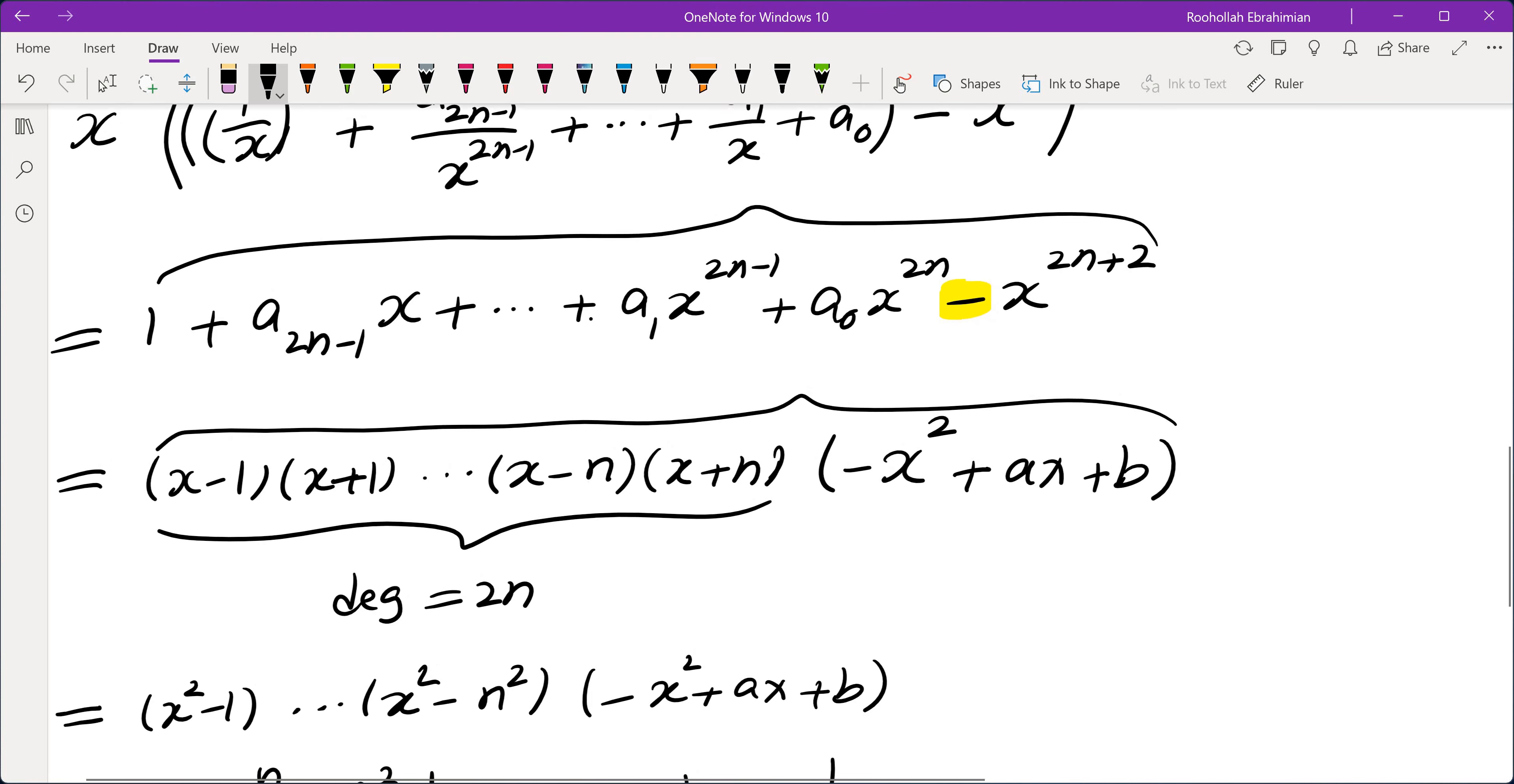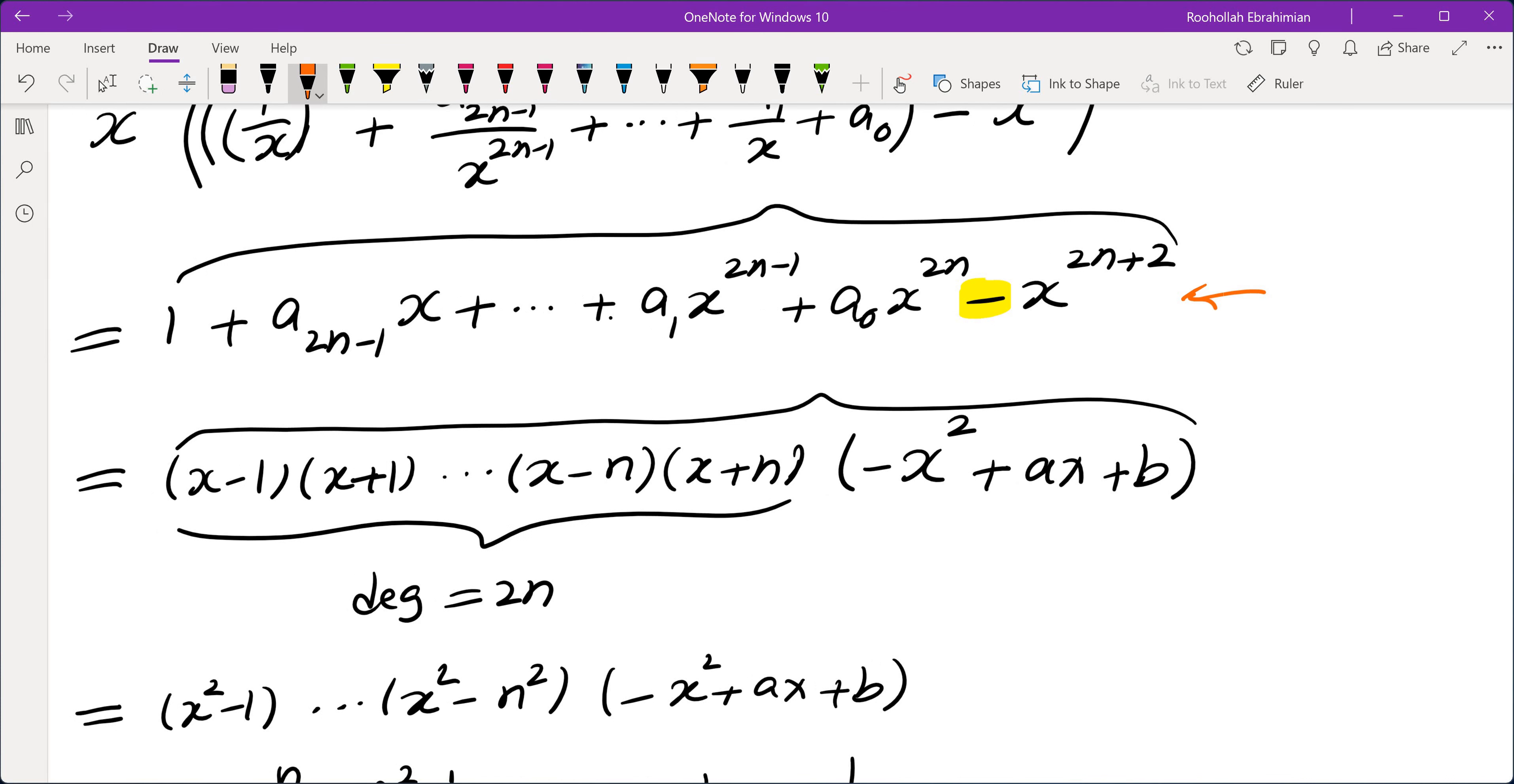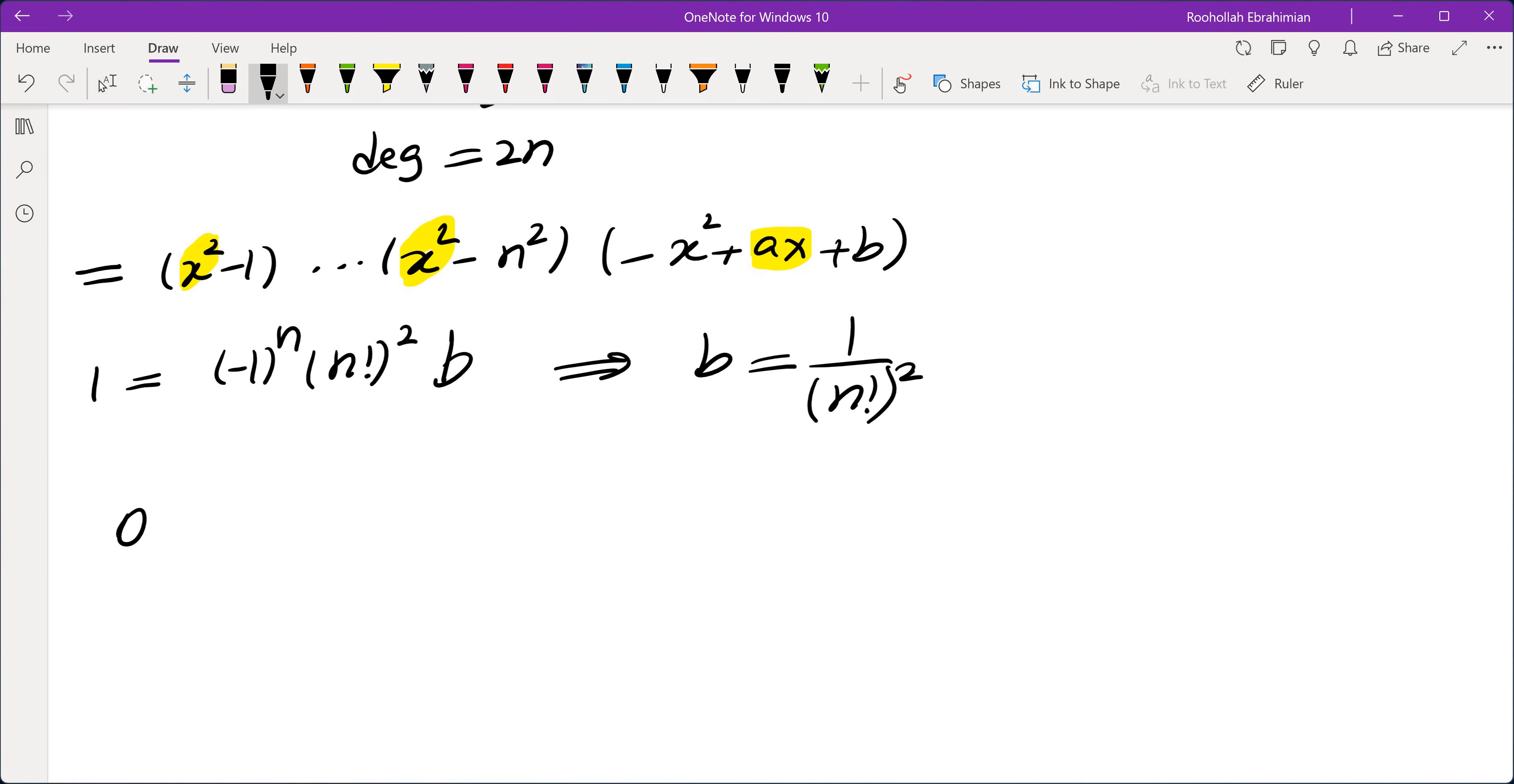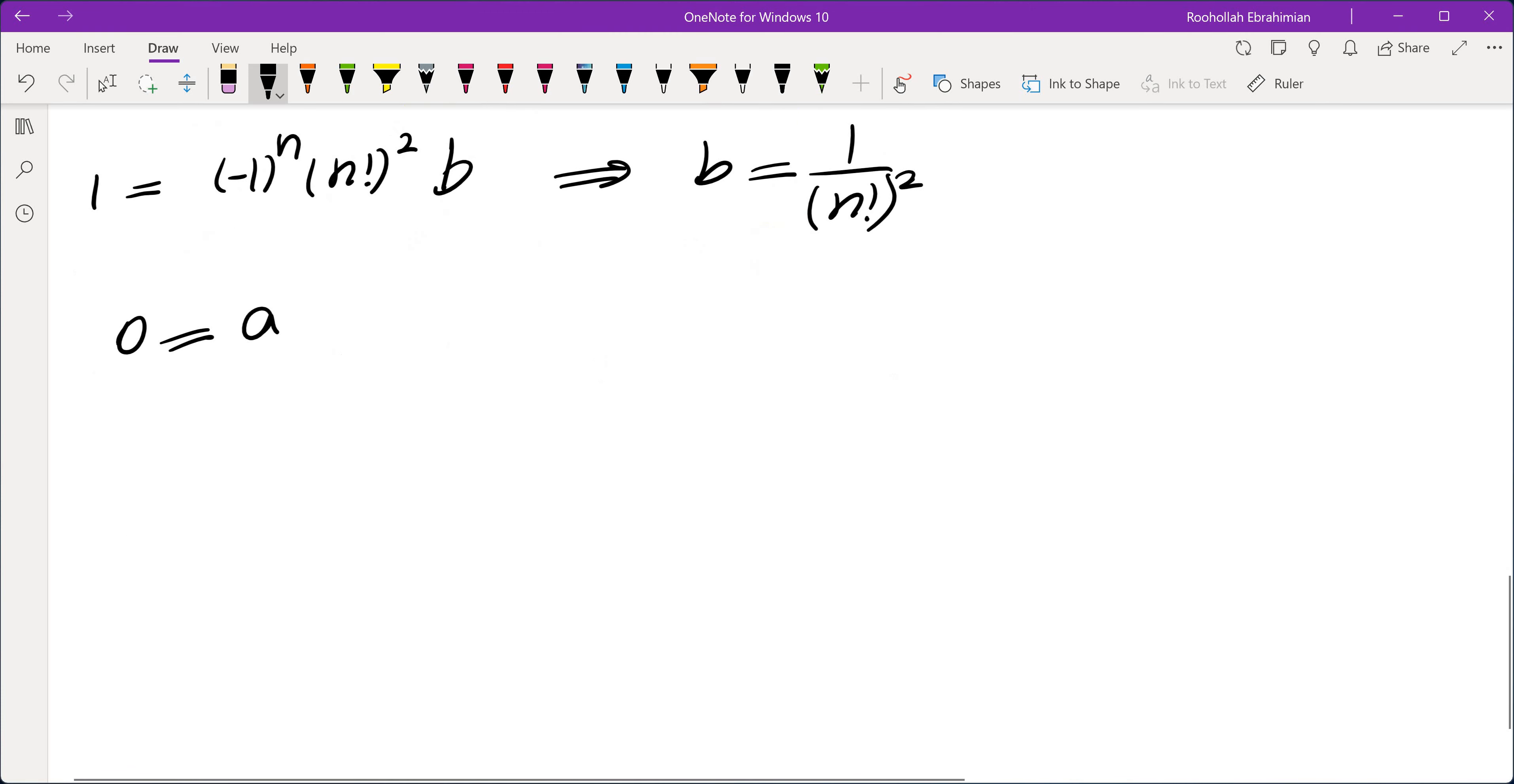Let's look at the coefficient of x to the power of 2n plus 1. There is no coefficient of x to the power of 2n plus 1 on this side. That's 0. At the bottom, in order to get to x to the power of 2n plus 2, you'll have to choose x squared from all of these terms and x from this term, which means we will get 0 on one side and on the other side we get a. So that means a is 0. So the equality that we are looking for is going to be x squared minus 1, x squared minus n squared, and finally we get minus x squared plus 1 over n factorial squared. And the question was, what are all other values of x that satisfy this equality? So the answer is x equals plus or minus 1 over n factorial.